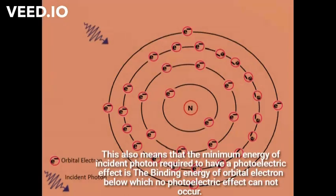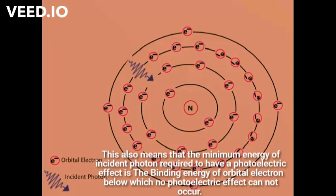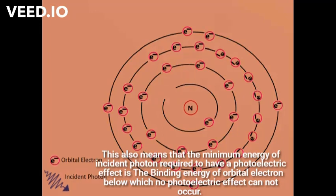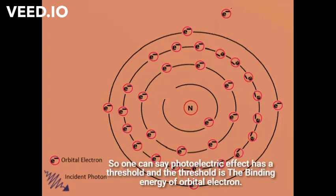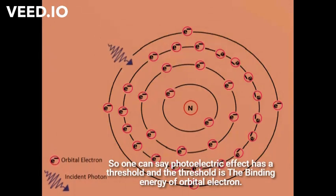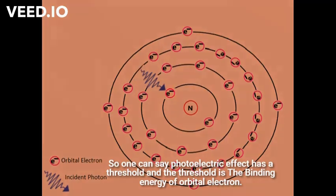This also means that the minimum energy of the incident photon required to produce a photoelectric effect is the binding energy of the orbital electron, below which no photoelectric effect can occur. So one can say the photoelectric effect has a threshold energy, and that threshold is the binding energy of the orbital electron.